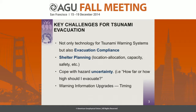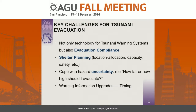We also need to cope with hazard uncertainty. The key question evacuees ask is: how far or how high should I evacuate? They don't think about tsunami velocity — they just want to know if their house will be inundated and how far they need to move. We need to give them simple, clear messages about the best behavior to take. Warning information upgrades and timing are also critical, which we'll see in the case study.